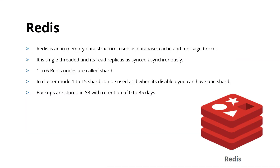Redis is another offering by AWS. It is an in-memory data structure that can be used as a database, cache, or a message broker. Contrary to Memcached, Redis is single-threaded, but it has many more offerings compared to Memcached. You can create replicas, and you can also create snapshots and backups of your data. In Redis, you can create six nodes in a particular shard. In Memcached, you can have one node up to a maximum of 20 nodes in one cluster, whereas in Redis you have concepts such as sharding. You can have a single-node cluster, a single-shard cluster, or a multi-shard cluster. In one shard, you can have from one to six nodes — one node will be the primary and the rest will be read replicas of the primary node.